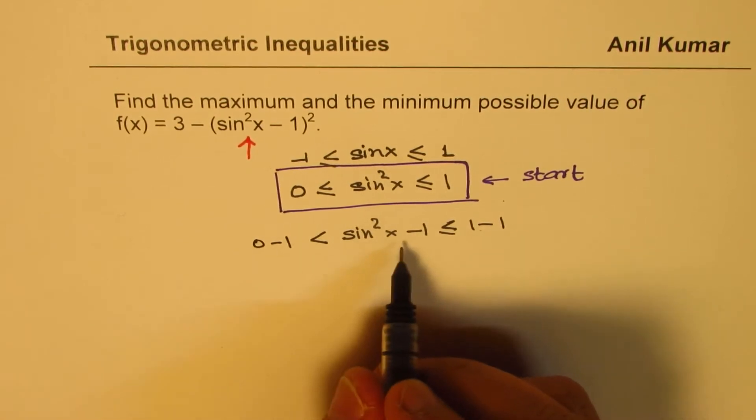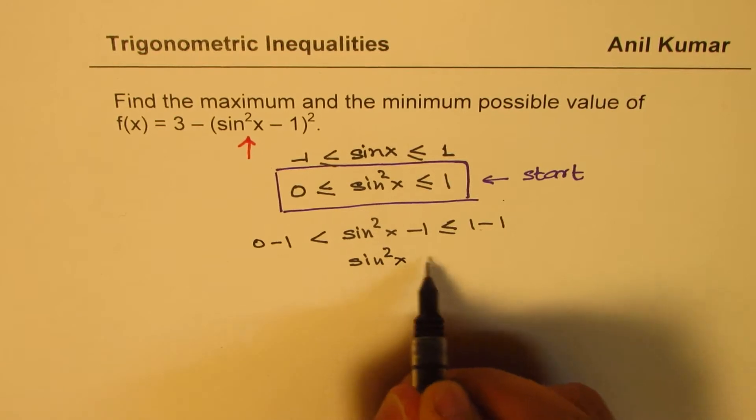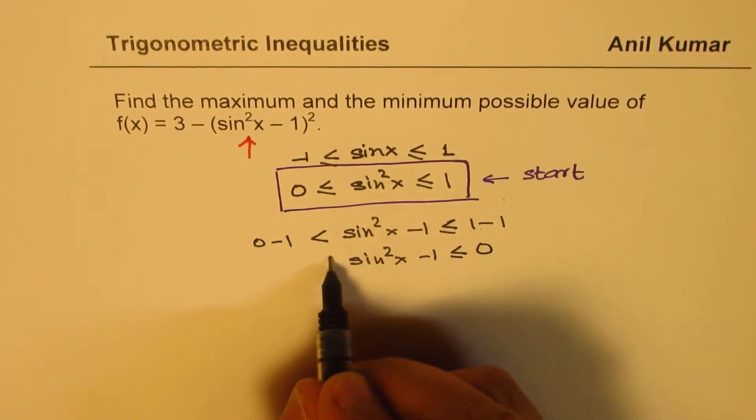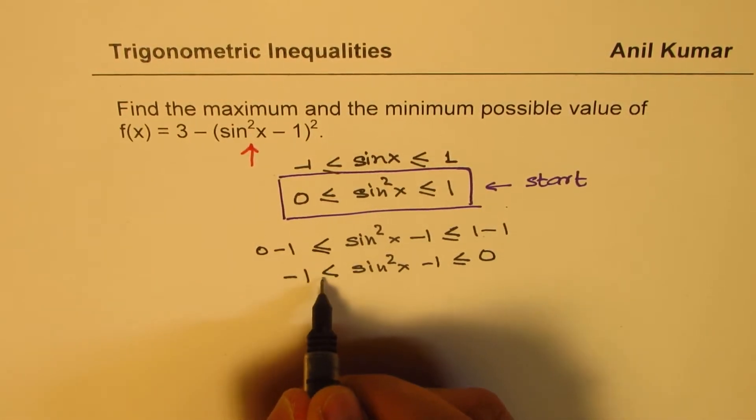So we get sin²x minus 1 is less than equal to 0 and is greater than minus 1. They should be greater than equal to, right.